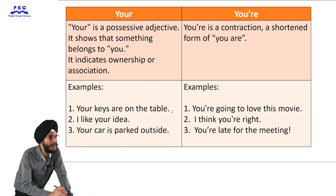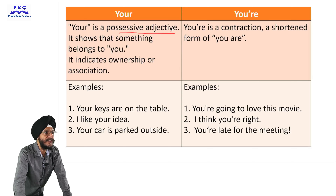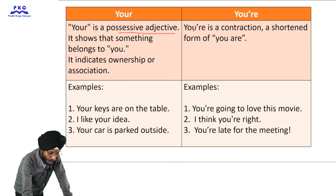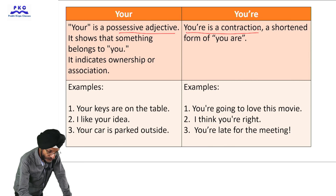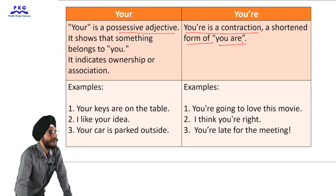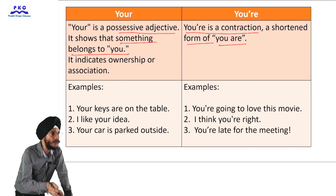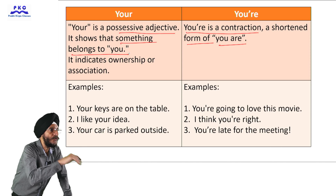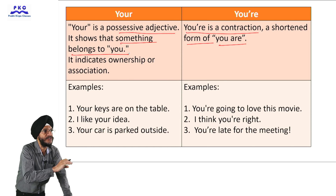Let us understand the difference between these two. 'Your' is a possessive adjective. On the other hand, 'you're' is a contraction — 'u apostrophe r e' — and it is a shortened form of 'you are'. 'Your' shows that something belongs to you; it shows ownership or association.